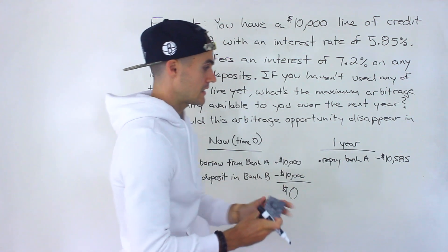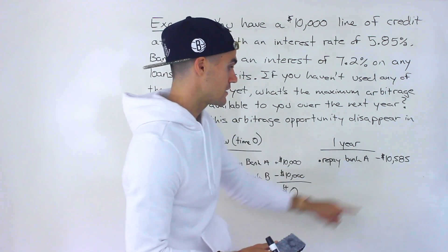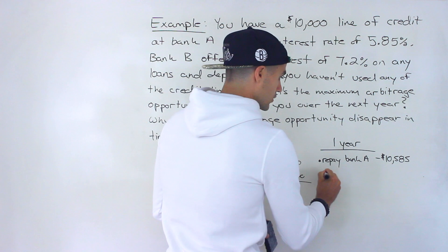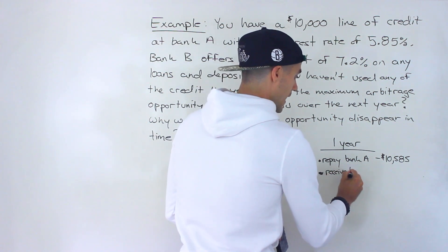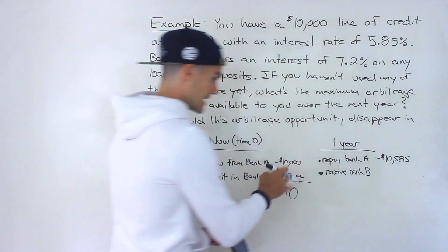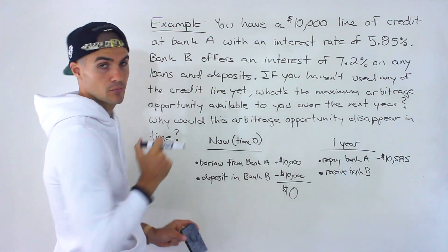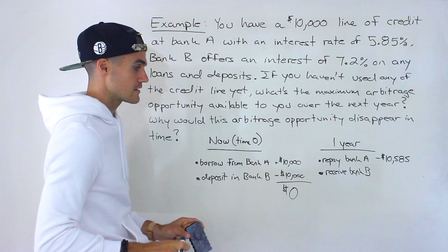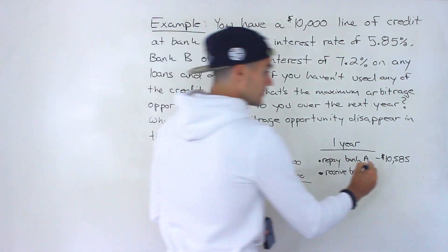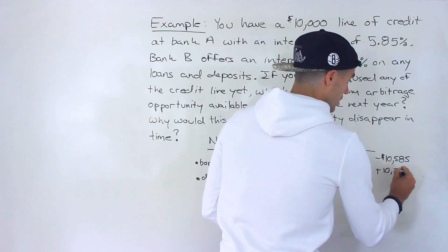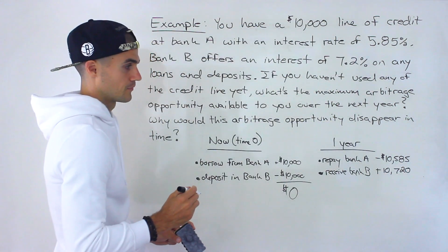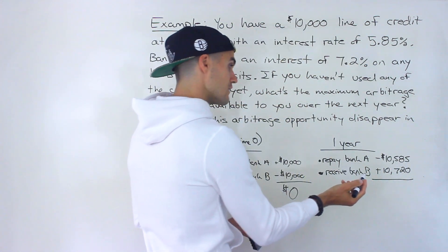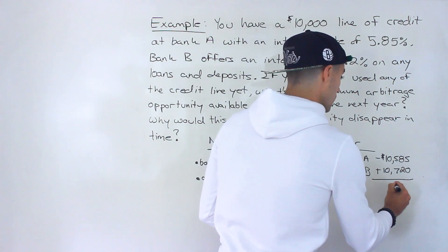You received $10,000 at time zero but now have to pay back $10,585. On the other side, you deposited $10,000 in Bank B, and now you receive back the $10,000 principal plus 7.2% interest. 7.2% of $10,000 is $720, so you receive $10,720 in total. The net is $10,720 minus $10,585, which gives you $135.